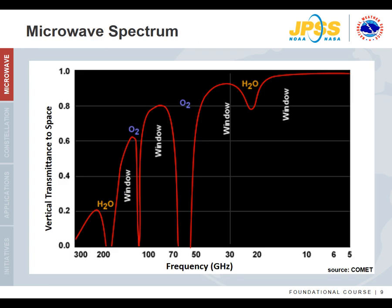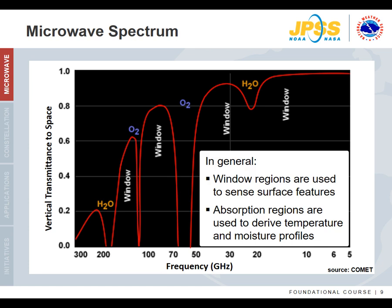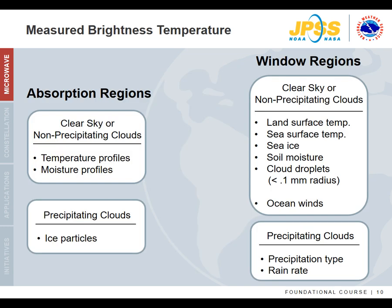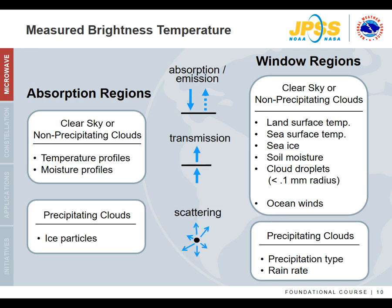This zoomed-in region of the microwave spectrum shows the vertical transmittance to space for a standard mid-latitude, cloud-free atmosphere on the y-axis, with frequency on the x-axis going from large to small. If the atmosphere were completely transparent to microwave energy, this graph would show a horizontal line near the value 1. It shows the major absorbing regions of oxygen and water vapor used in atmospheric temperature and moisture profiles, and the window regions where the surface can be observed. The observed brightness temperatures are influenced by absorption and emission properties, transmission, and scattering. For a clear sky or one with non-precipitating clouds, the dominant properties are absorption, emission, and transmission.